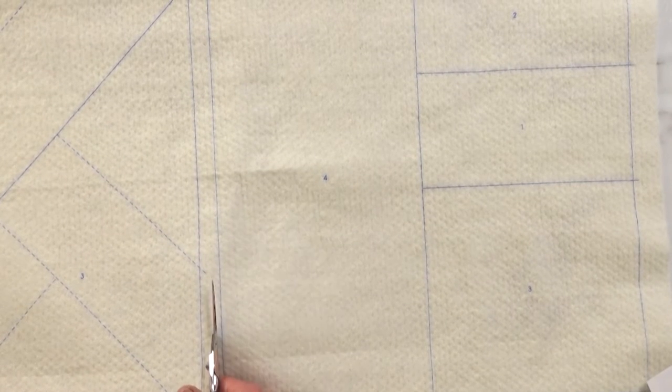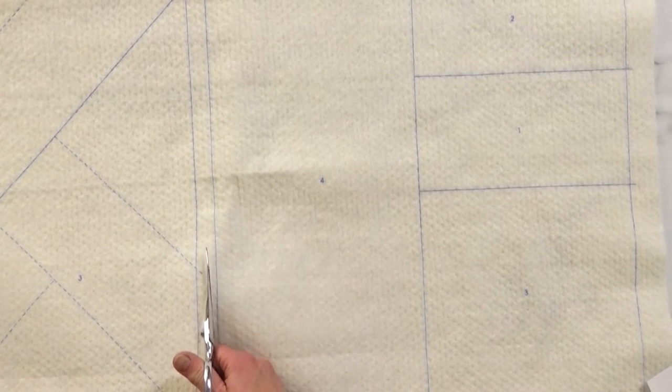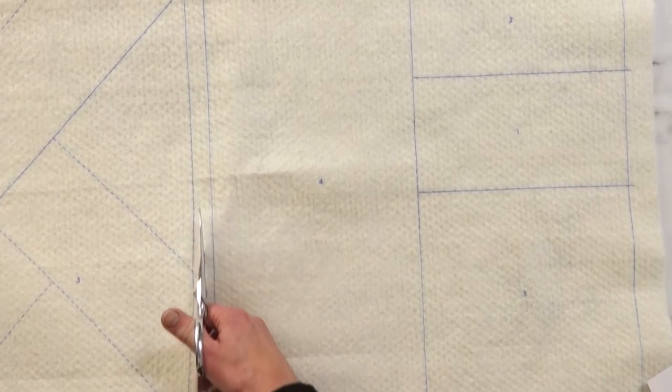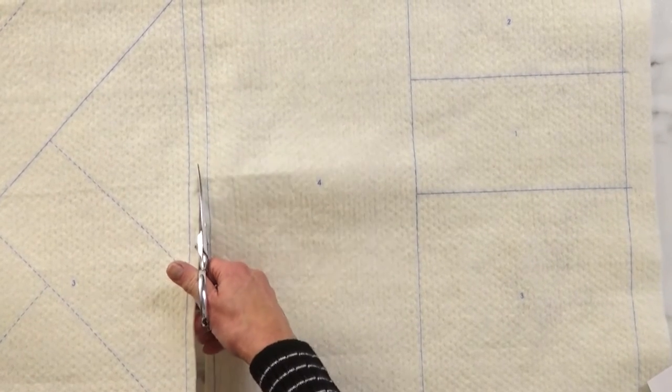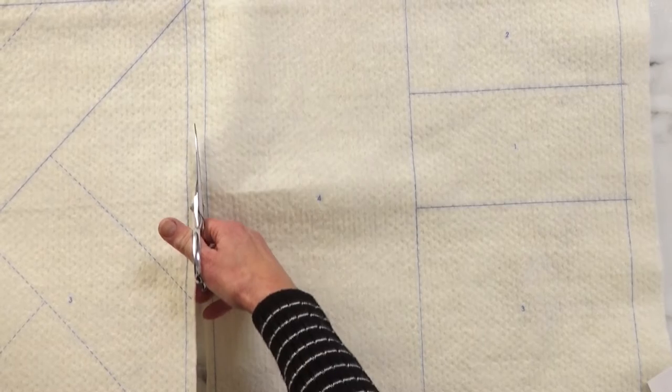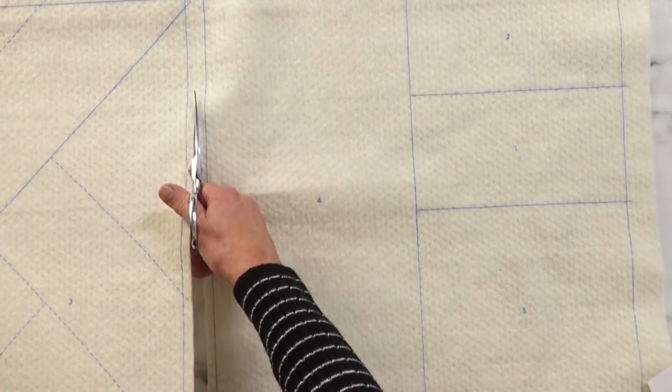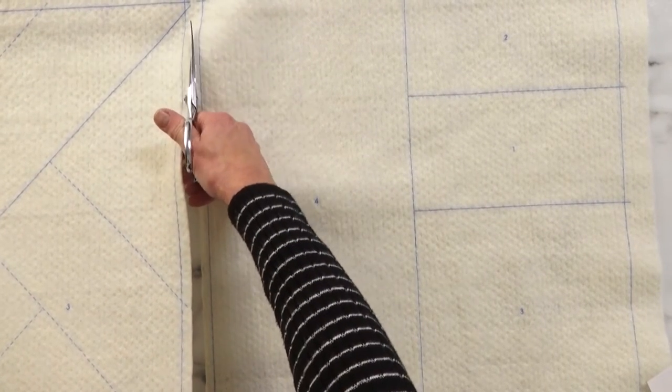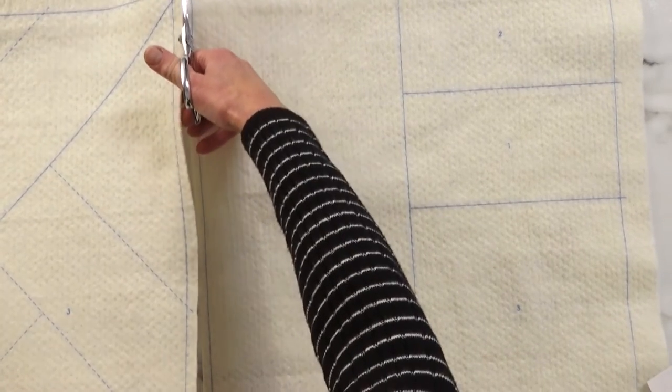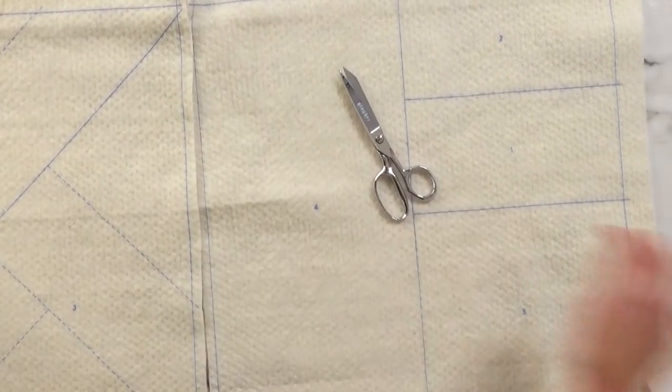The first thing we will do in order to create the sew by number pillow covers is to cut apart the three pillow designs. You want to carefully cut between the three different designs as evenly as possible. You can use a scissors or a rotary cutter and cutting mat. Then complete cutting out the pillow top batting pattern leaving a half inch margin on the remaining sides.